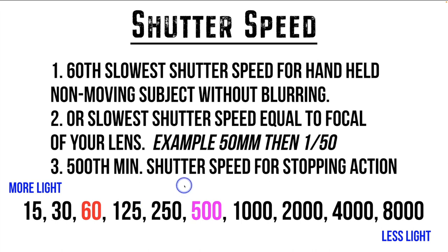Now, if you look on your camera, you'll notice there are numbers in between these numbers, and those numbers go in third stops. The reason for that is we actually need to be more accurate when getting an exposure. Originally, back in film days, we only went in half stops. But since digital came along, it's a little bit more sensitive, so we have the ability to change our exposure in thirds of stops. To simplify the teaching process, we use whole stops.